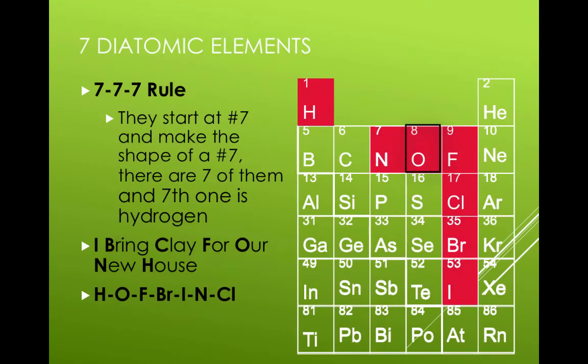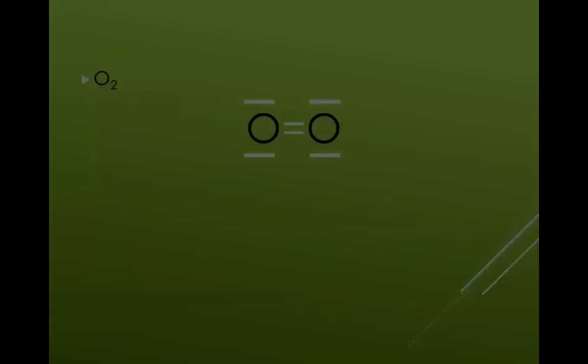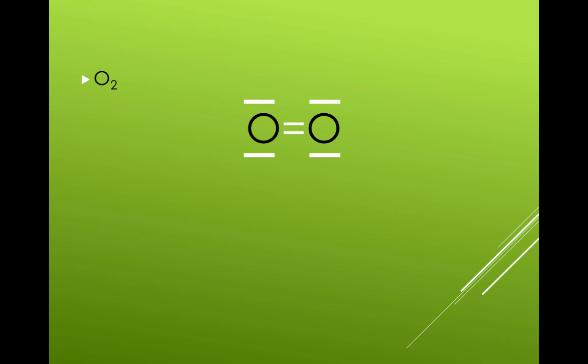Oxygen is missing two electrons from its valence shell, giving it six, while nitrogen is missing three valence shell electrons, giving a total of five. Oxygen completes its valence shell by covalently binding to a second oxygen using a double bond.